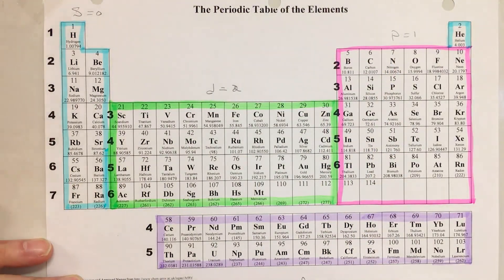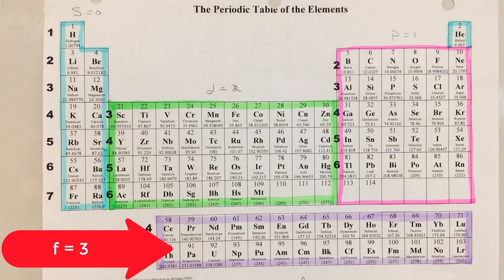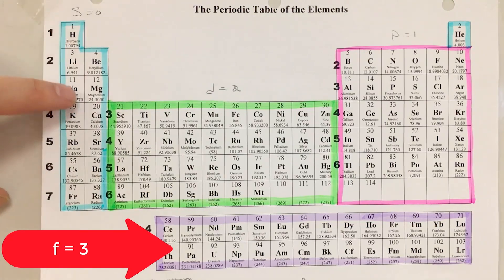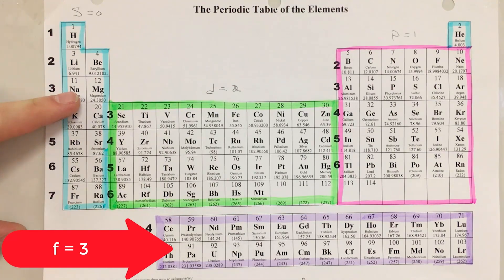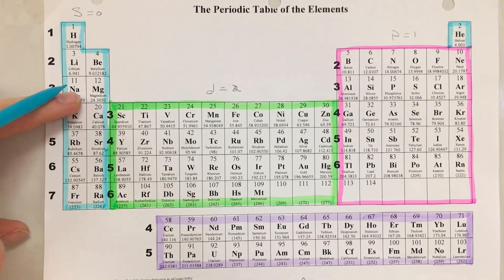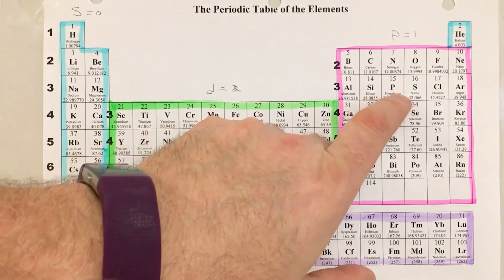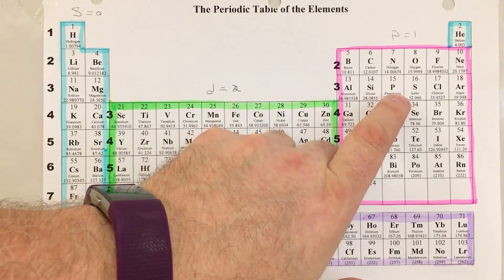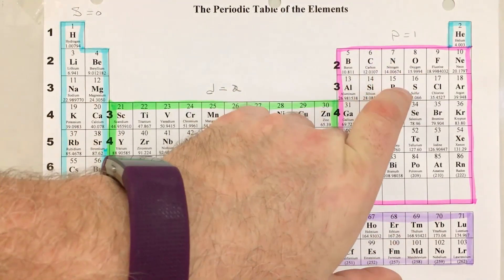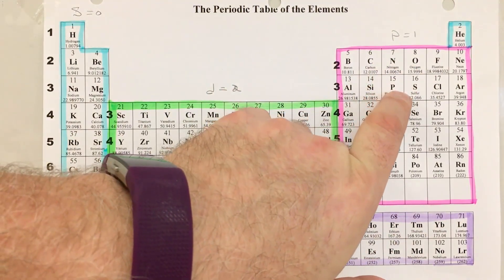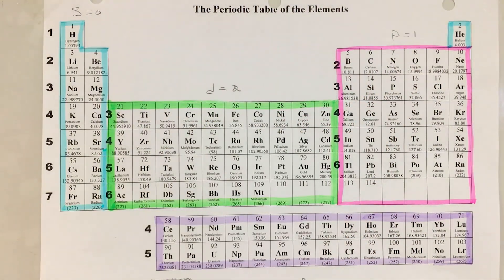I can put my finger on any electron. For the 11th electron (sodium), the first quantum number is 3 and the second quantum number is 0. For phosphorus, the 15th electron, the first quantum number is 3 and since it's in the p orbital, the second quantum number is 1. But where the periodic table really shines is with the third and fourth quantum numbers.